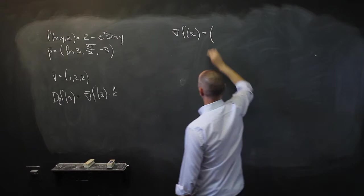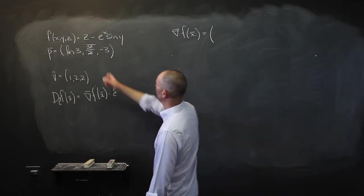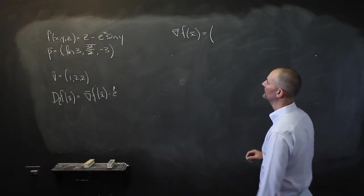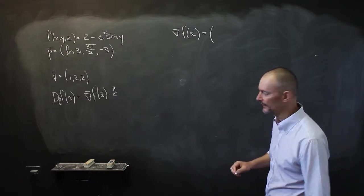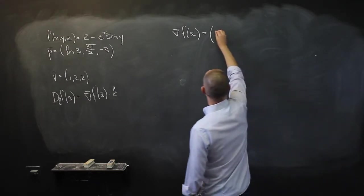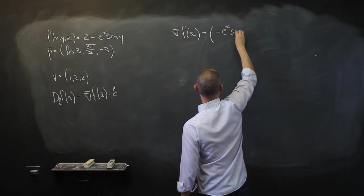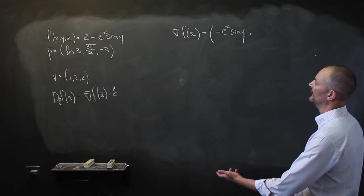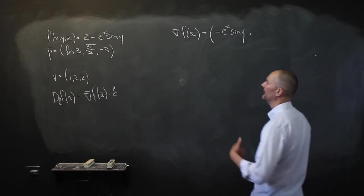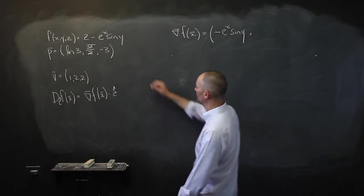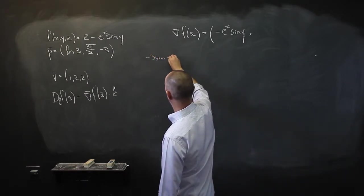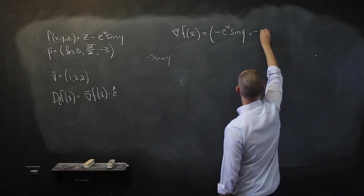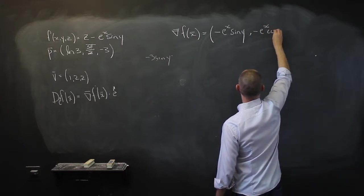The first partial derivative with respect to x: z is a constant so that's zero, sine of y is a constant so it remains, and the derivative of e to the power x is e to the power x. So it's negative e to the power x times sine of y. With respect to y: z is still constant, that's zero; negative e to the power x is a constant; and the derivative of sine of y is cosine of y — giving negative e to the power x times cosine of y.